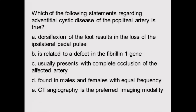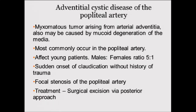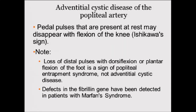D — found in equal frequency between male and female — that's not true. Therefore, the answer is E: CT angiogram is needed to get the diagnostic information. This condition results from a myxomatous tumor arising from the arterial adventitia with mucoid degeneration of the media. It usually occurs in the popliteal artery. Male-to-female ratio is 5 to 1. Onset of claudication symptoms is common. There is focal narrowing of the popliteal artery. Treatment is straightforward surgical excision, usually via a popliteal approach.